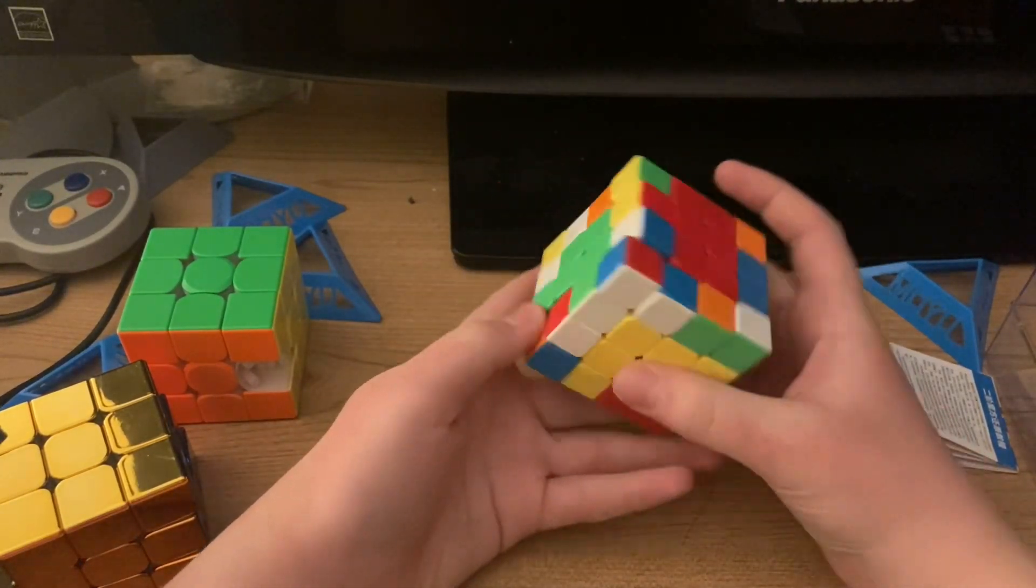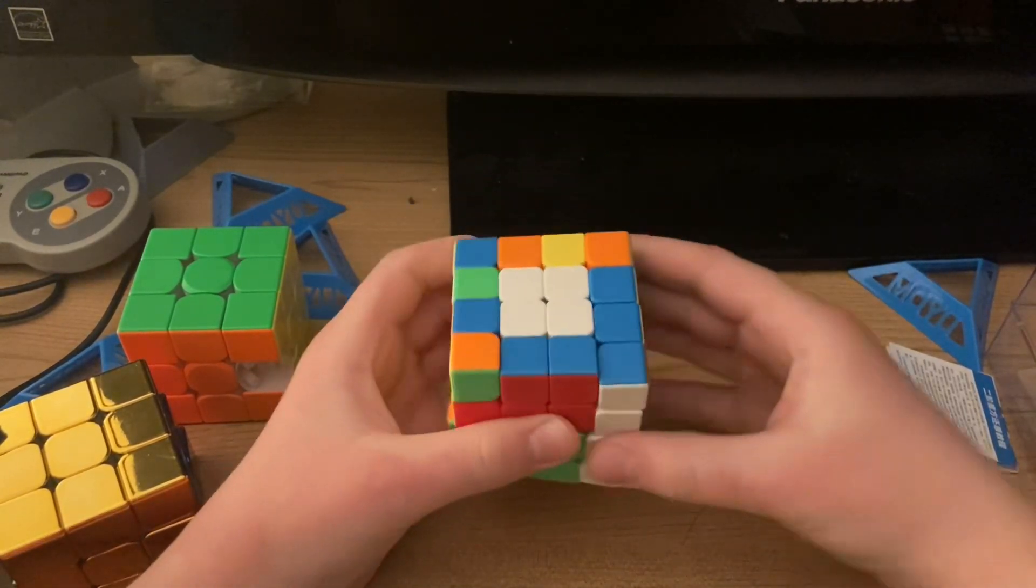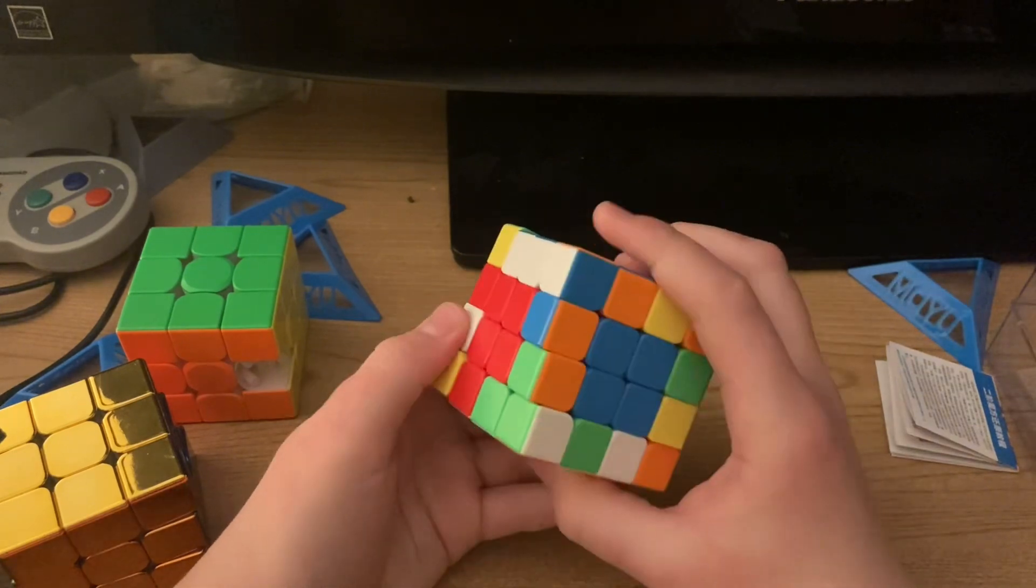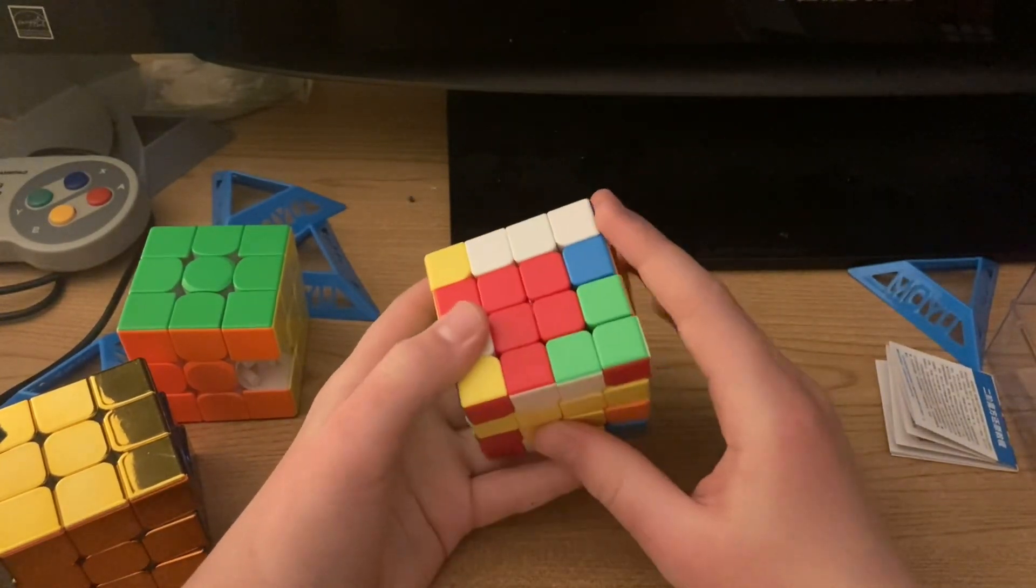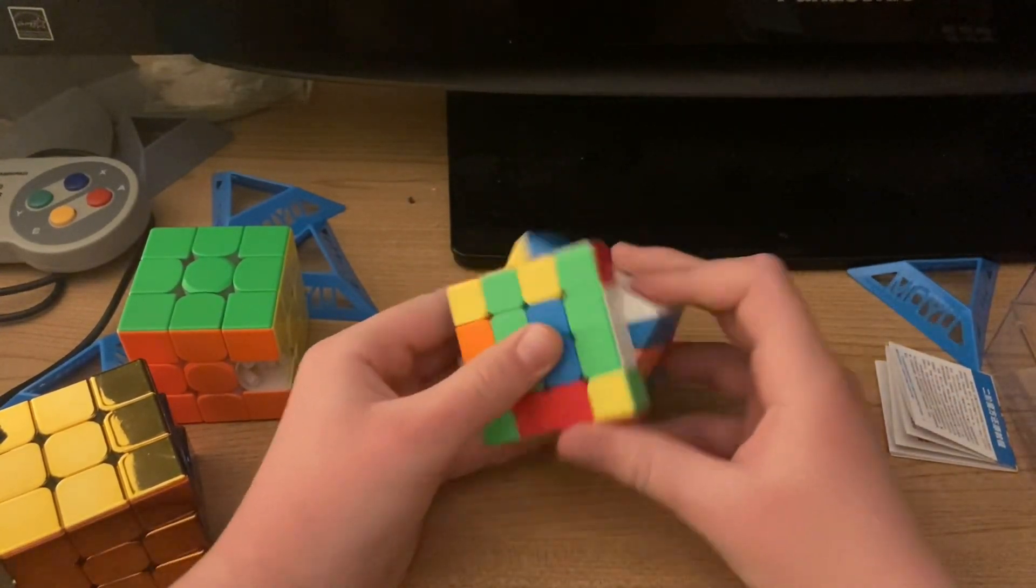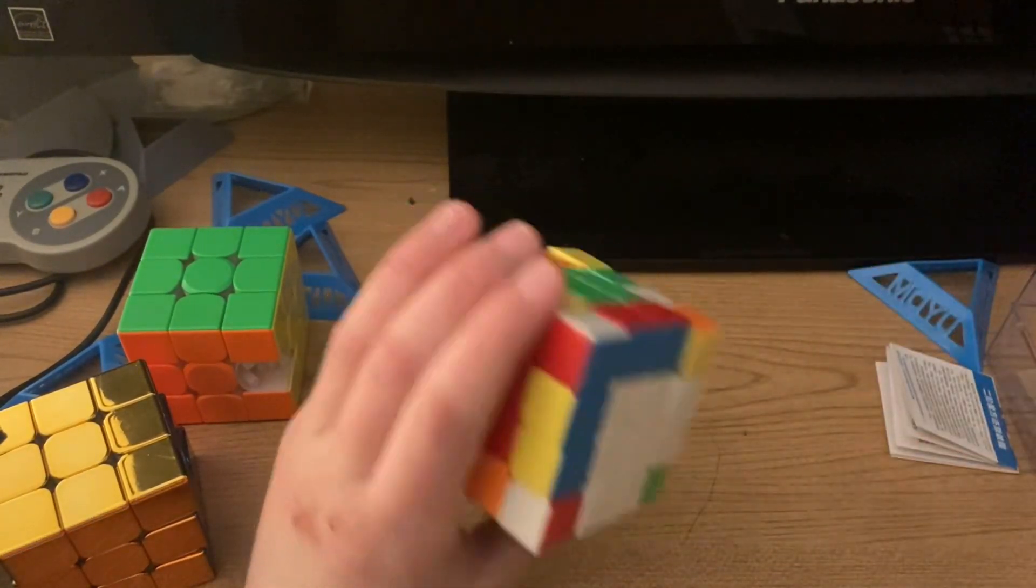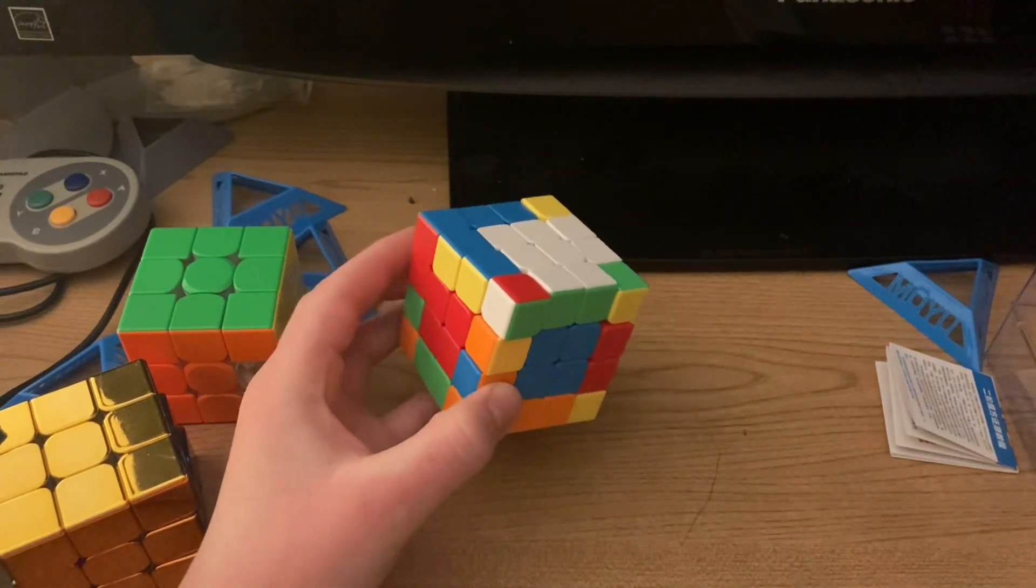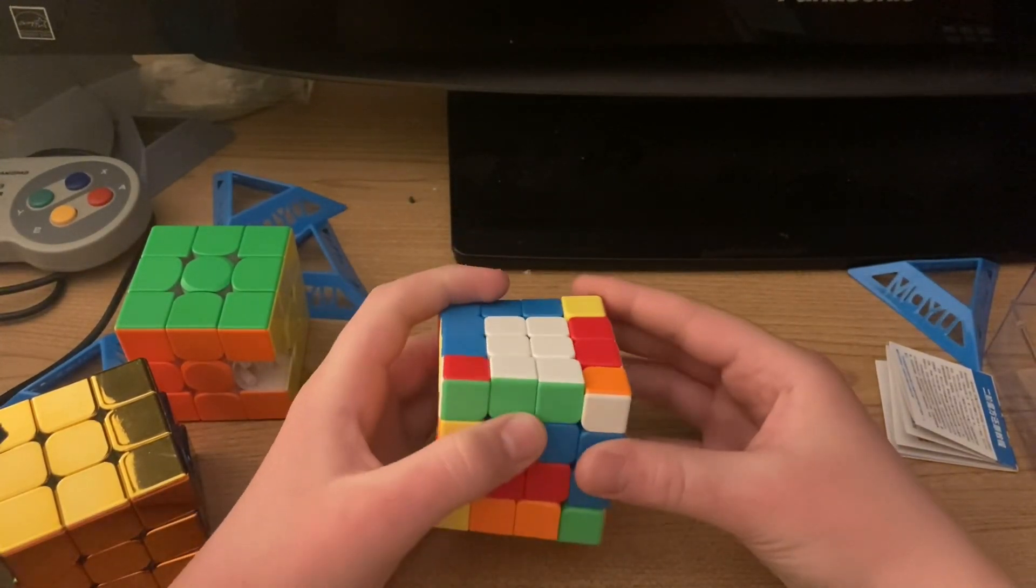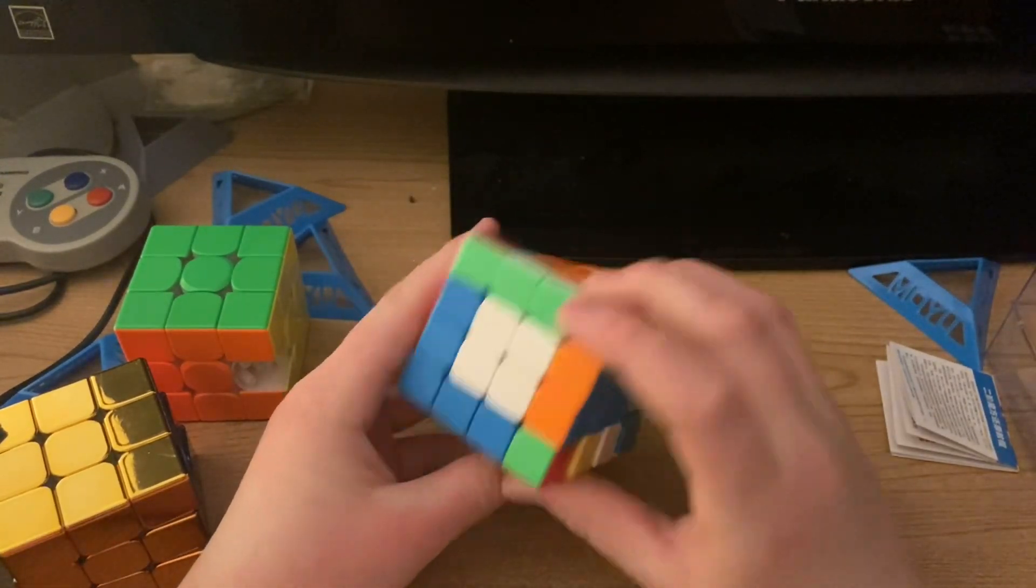You can continue that, and there's also some algorithms that you do at the end. There's a pair, pair it up, bring it down, pair that up. There's another green. This is beginner's method, by the way. I think I'm just going to put that in the title.